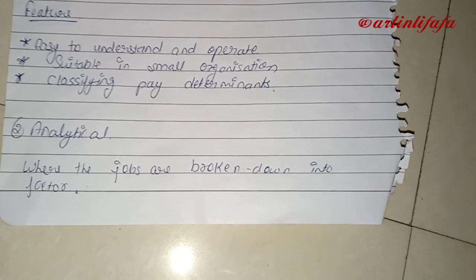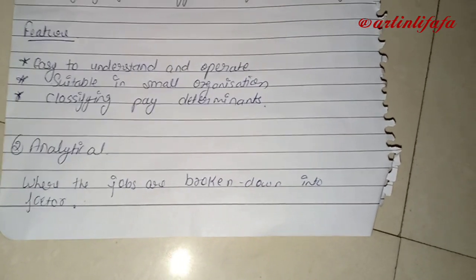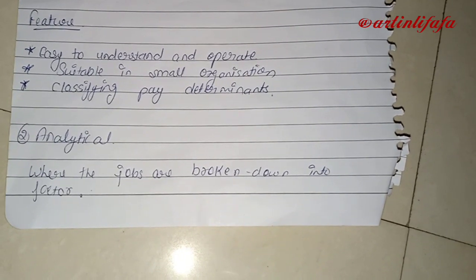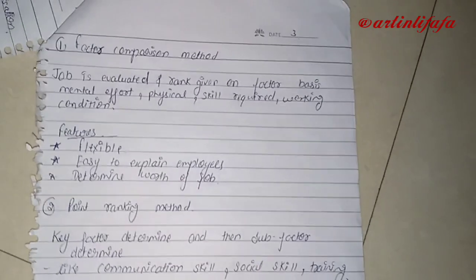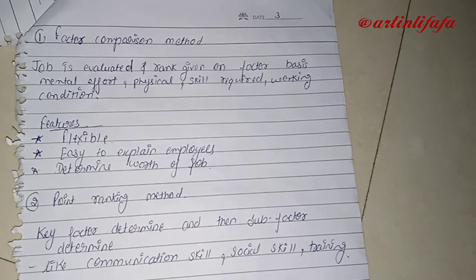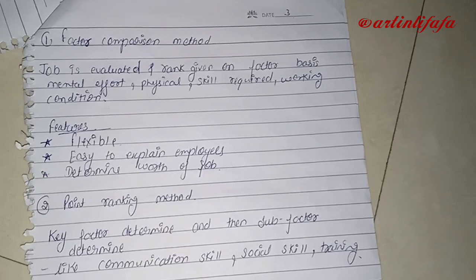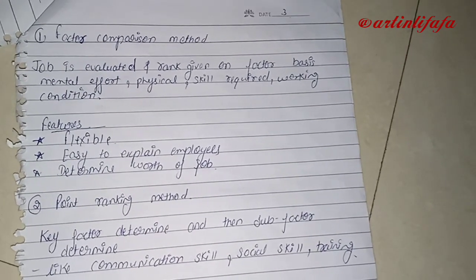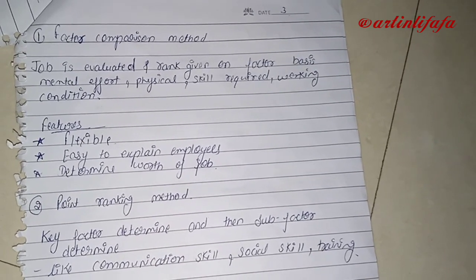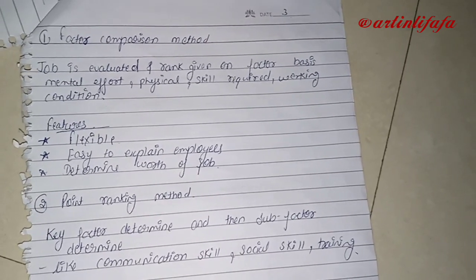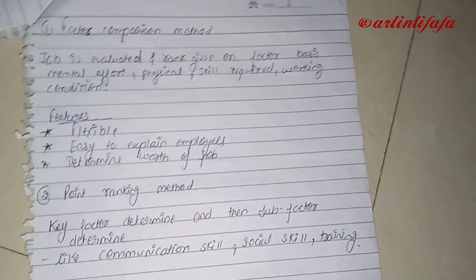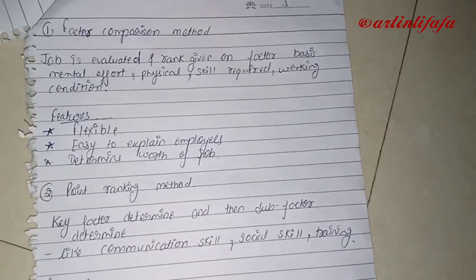The analytical method is where jobs are broken down into factors so that we can easily analyze and assign a pay structure. Under the analytical method, the first approach is factor comparison. In the factor comparison method, jobs are evaluated and ranked on a factor basis — such as mental efforts, physical ability, skills required, and working conditions — to determine the appropriate pay structure.